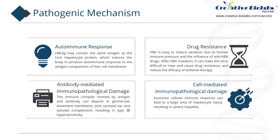Antibody-mediated immunopathological damage: specific antibodies such as HBsAb, Pre-1-Ab, and Pre-2-Ab in serum after HBV infection can directly remove free viruses from blood circulation. However, immune complexes formed by antigen and antibody can deposit in the glomerular basement membrane and joint synovial sac and activate complement, resulting in type 3 hypersensitivity. Immune complexes can also be deposited in hepatocytes, causing hepatic capillary embolism and resulting in acute liver necrosis.